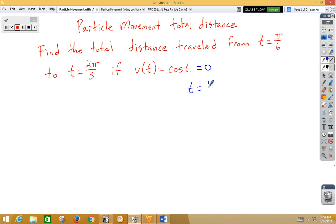And if we think about the graph of cosine, just for a moment, our graph of cosine looks something like this. And if we have π/6, and we have 2π/3, clearly we have a 0 in between, and that would be at π/2.